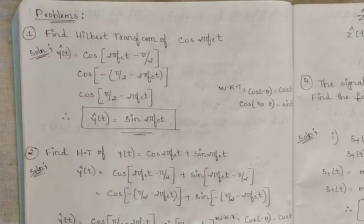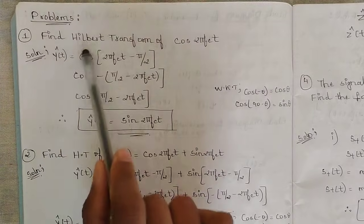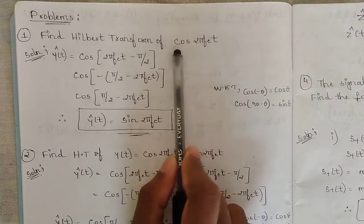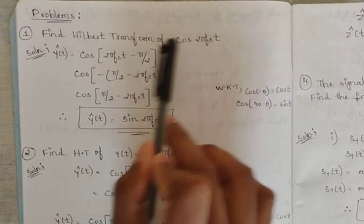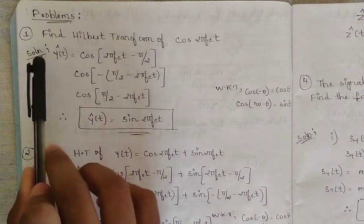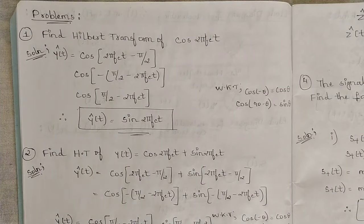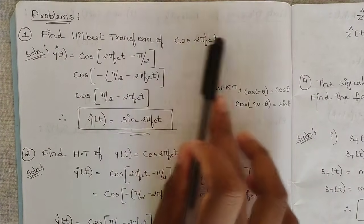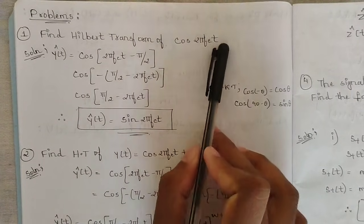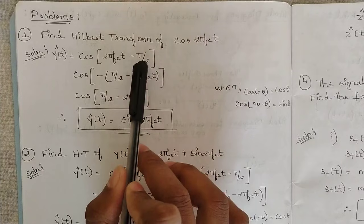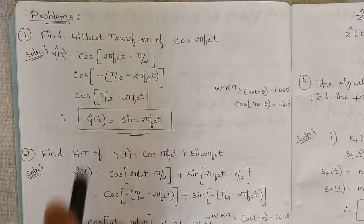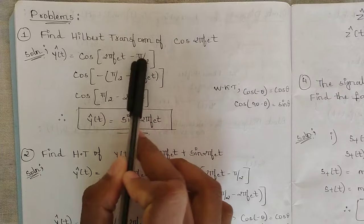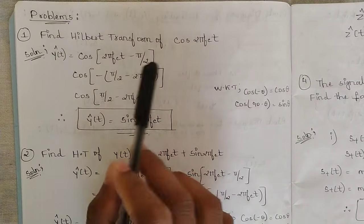Let's discuss them one by one. The first question is: find the Hilbert transform of the function y(t) = cos(2πfct). If we consider this term as y(t), then the Hilbert transform is written as ŷ(t). To find it, we consider the phase difference with respect to the angle θ — we add a phase difference of 90 degrees, as discussed in the canonical representation form. So we get cos(2πfct − π/2).